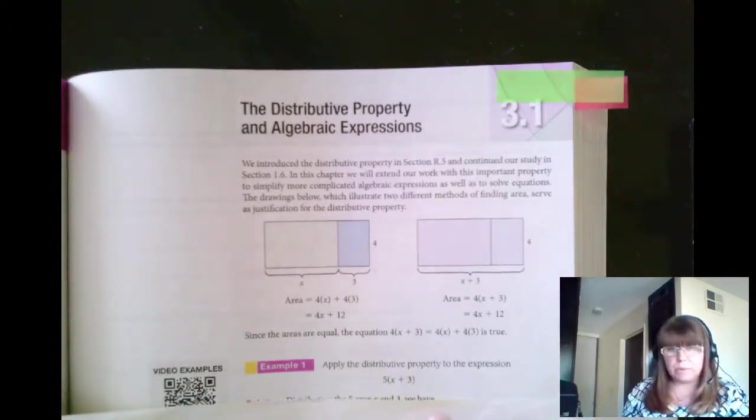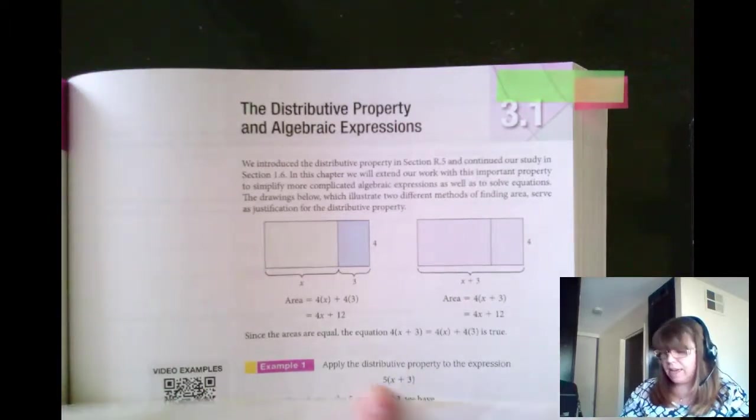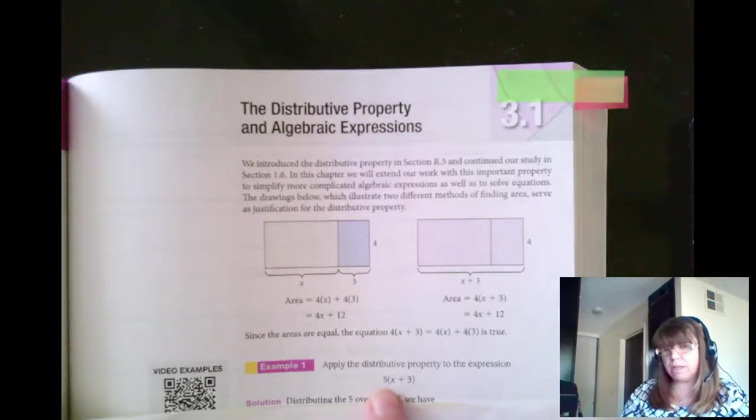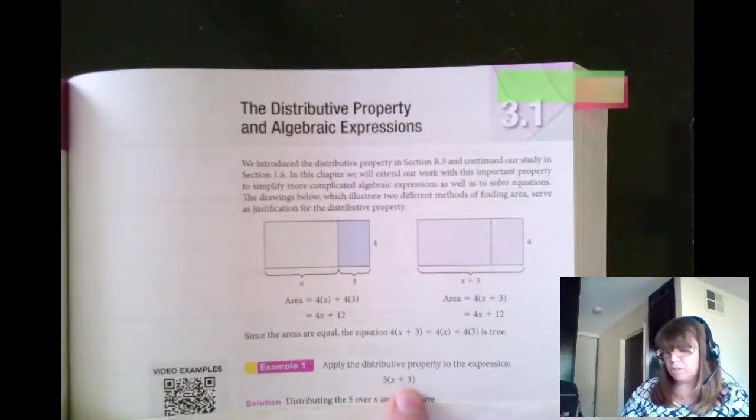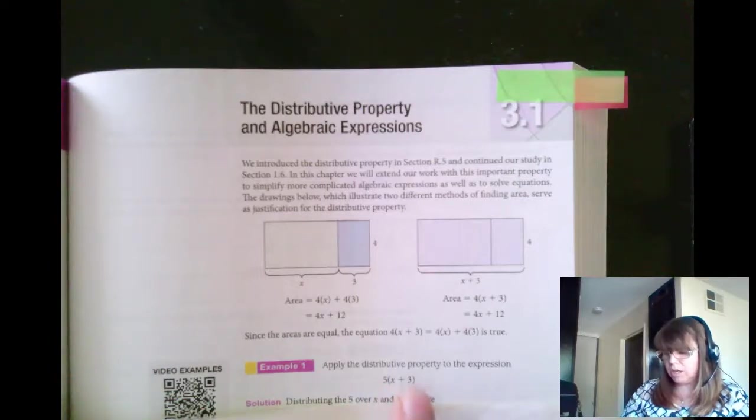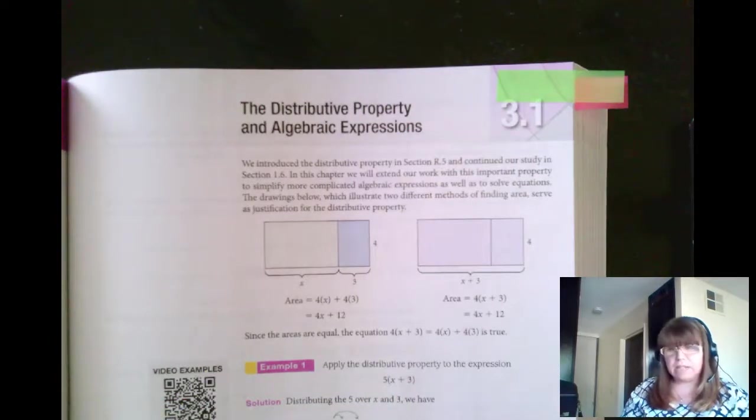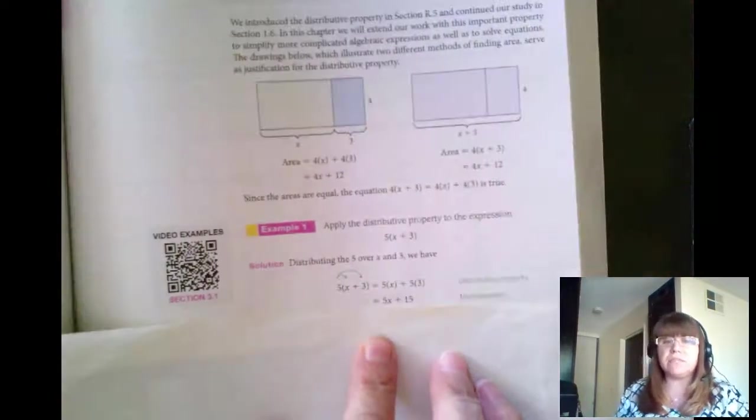Let's take an example. If I have 5 times quantity x plus 3, I'm going to distribute the 5 to the x as well as to the 3, so I get the answer of 5x plus 15.